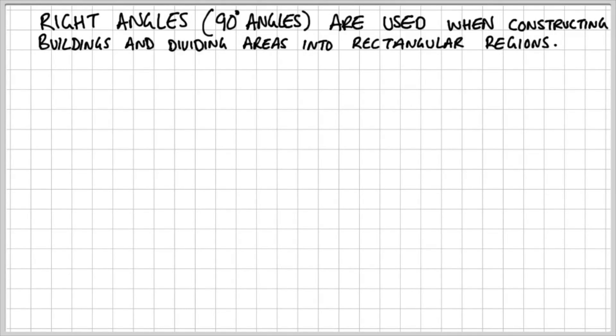So when do you ever use Pythagoras' theorem? Well, right angles, 90 degree angles, are used when constructing buildings and dividing areas into rectangular regions. Now that's only one example of using right angles.